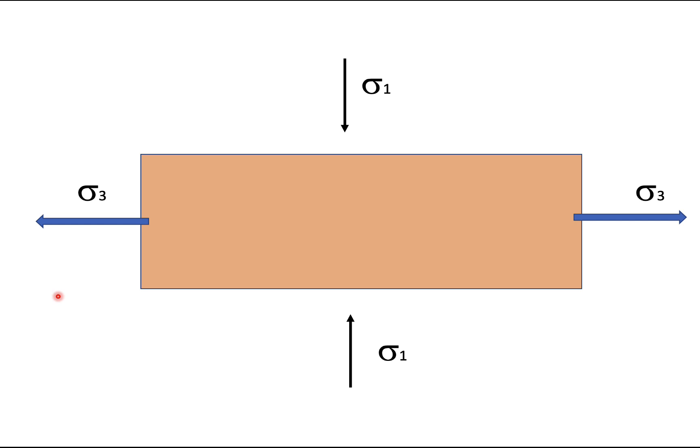And they're produced by stretching. So if we have sigma three in the horizontal plane that's the minimum compressive stress or in this case a stretching stress.